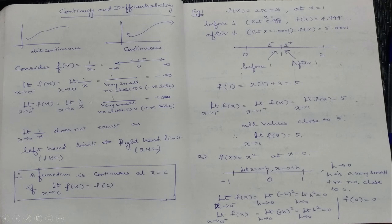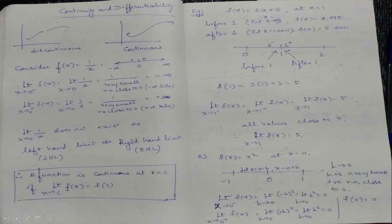f(1) equals 5. Left-hand limit equals right-hand limit equals the value of the function at 5. When left-hand limit equals right-hand limit, we say the limit at x = 1 of f(x) equals 5. f(1) represents the value of the function at 1 — just put the value 1 into the function. Left-hand limit and right-hand limit give the same value 5; the value of f(1) is also 5. So when the limit of a function equals the value of the function at that point, the function is continuous.